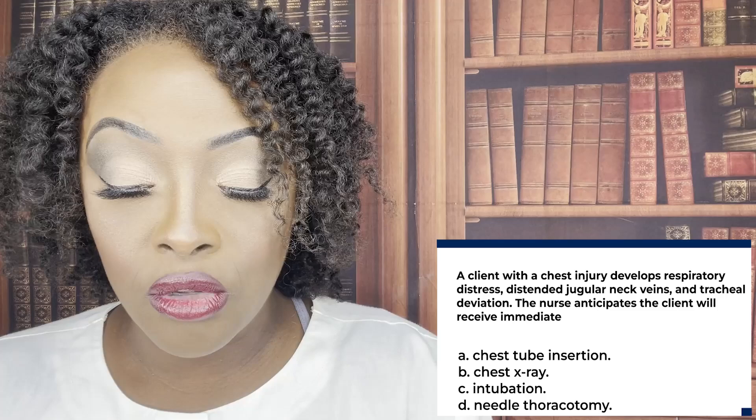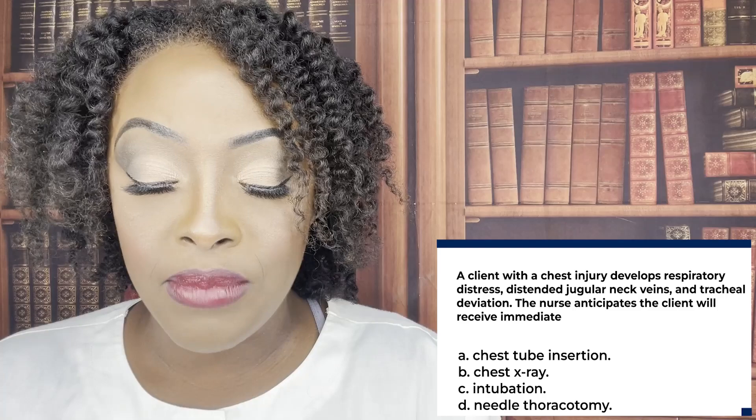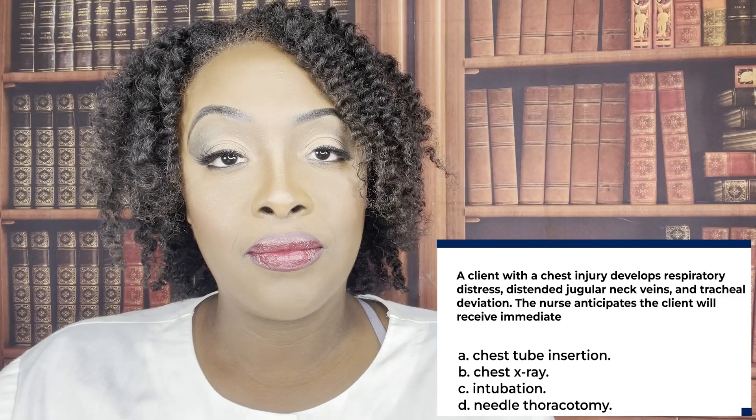A client with a chest injury develops respiratory distress, distended jugular veins, and tracheal deviation. The nurse anticipates that the client will receive immediate: A, chest tube insertion; B, chest x-ray; C, intubation; or D, needle thoracotomy.